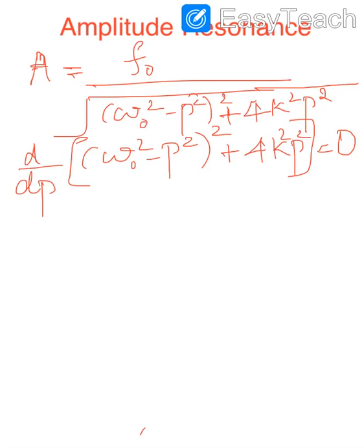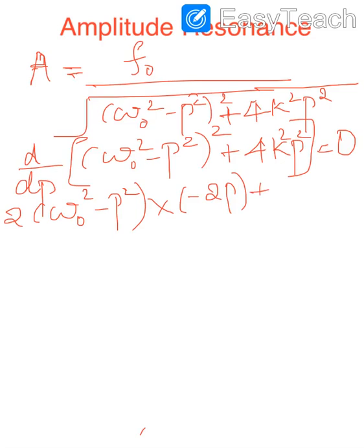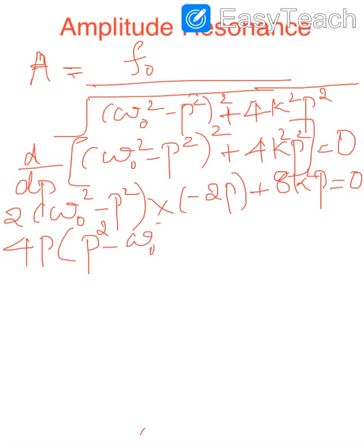Differentiating with respect to p: the first term (ω₀² − p²)² gives 2(ω₀² − p²) · (−2p), since ω₀ is a constant and the derivative of −p² is −2p. The second term 4k²p² gives 8k²p. Setting the full expression to zero: −4p(ω₀² − p²) + 8k²p = 0, which simplifies to p²  − ω₀² + 2k² = 0, with the negative sign applied inside the bracket.